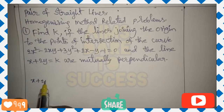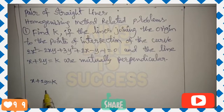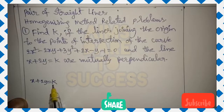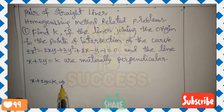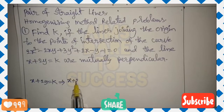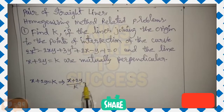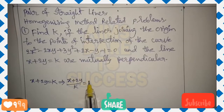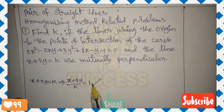Find k if the lines joining the origin to the points of intersection of the curve 2x² − 2xy + 3y² + 2x − 1 = 0 and the line x + 2y = k are mutually perpendicular.